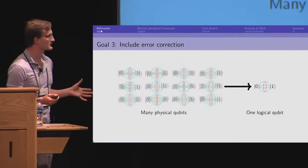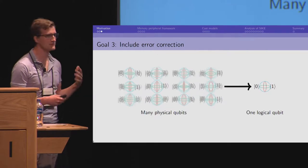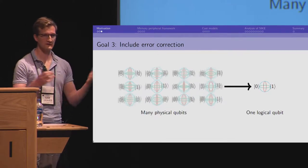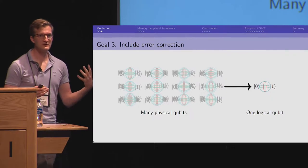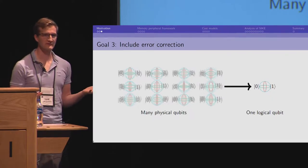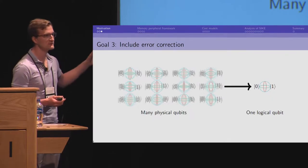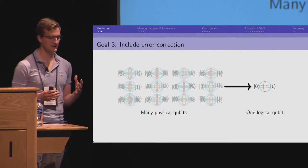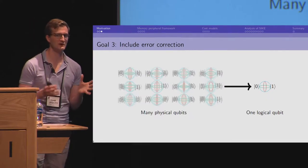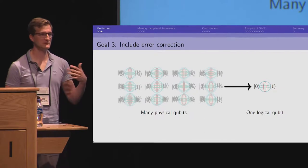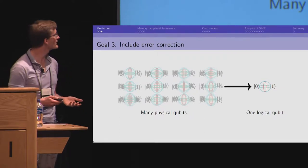And finally, we want to include error correction. So, in classical computers, we have error correction. And usually, we don't worry too much about it, because it's not that much of an expense. But in quantum computers, it's a bigger deal. And in fact, quantum errors are just fundamentally more complicated than classical errors. So, we need to include this in the model if we want an accurate reflection of cost.